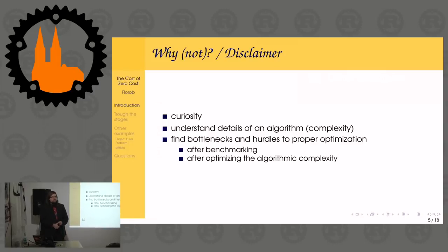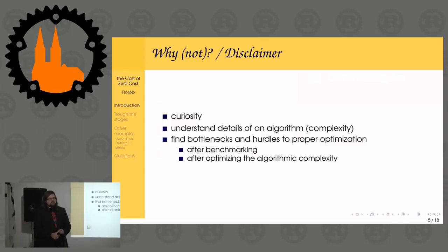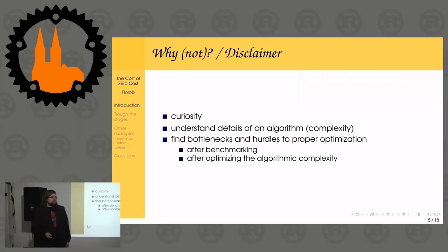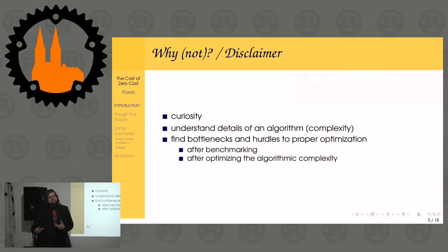Curiosity - definitely the most important reason. Just because, hey, let's look at what that actually generates because that could be fun. Otherwise, maybe you want to understand details of an algorithm. Abstractions in Rust can at times be very abstract - with macro_rules macros or proc macros, you can write one macro and it expands to the universe. So you don't necessarily see what's going on in terms of algorithmic complexity.